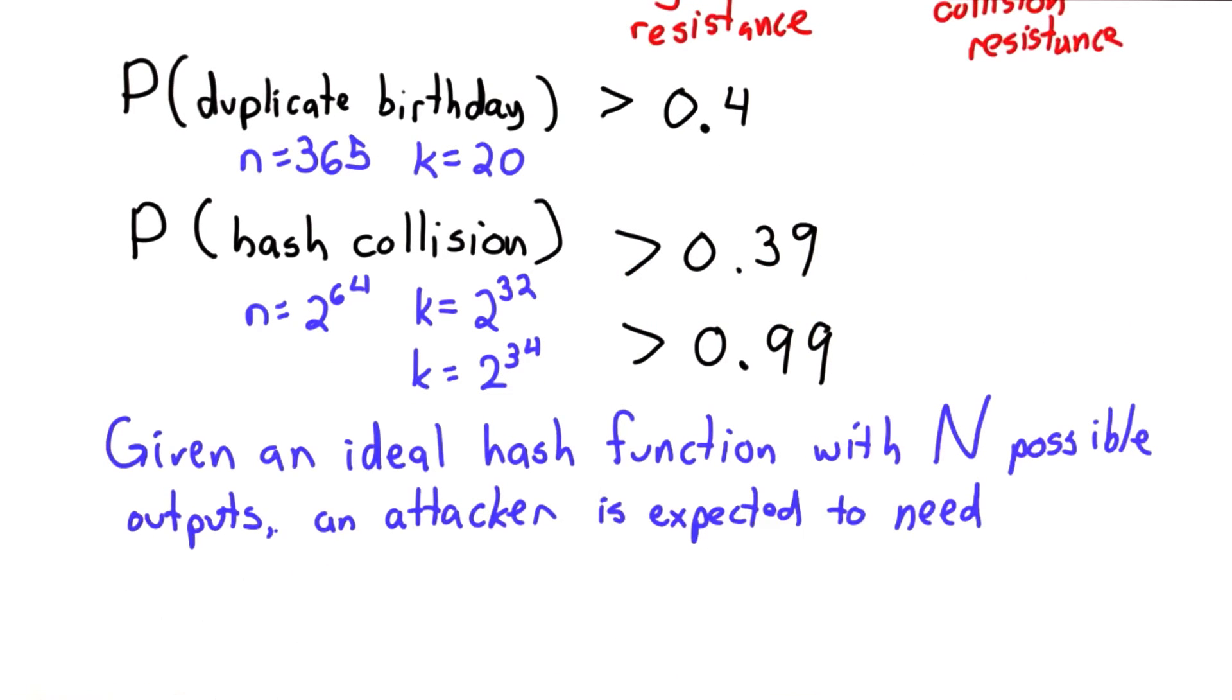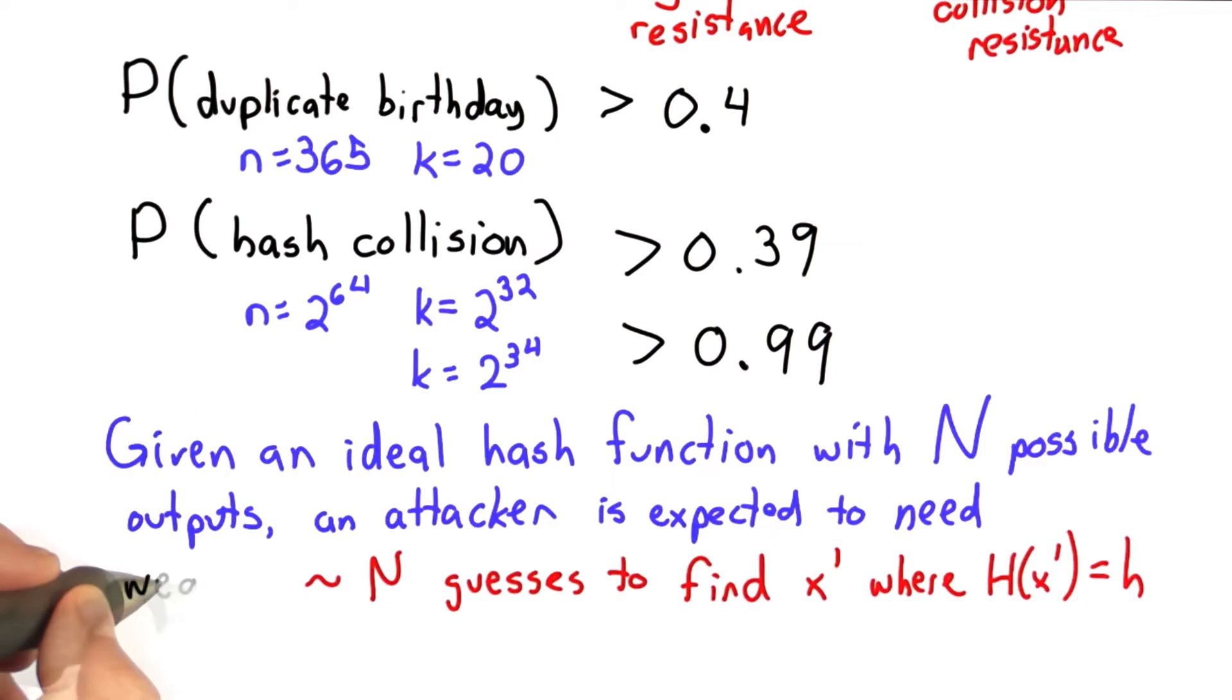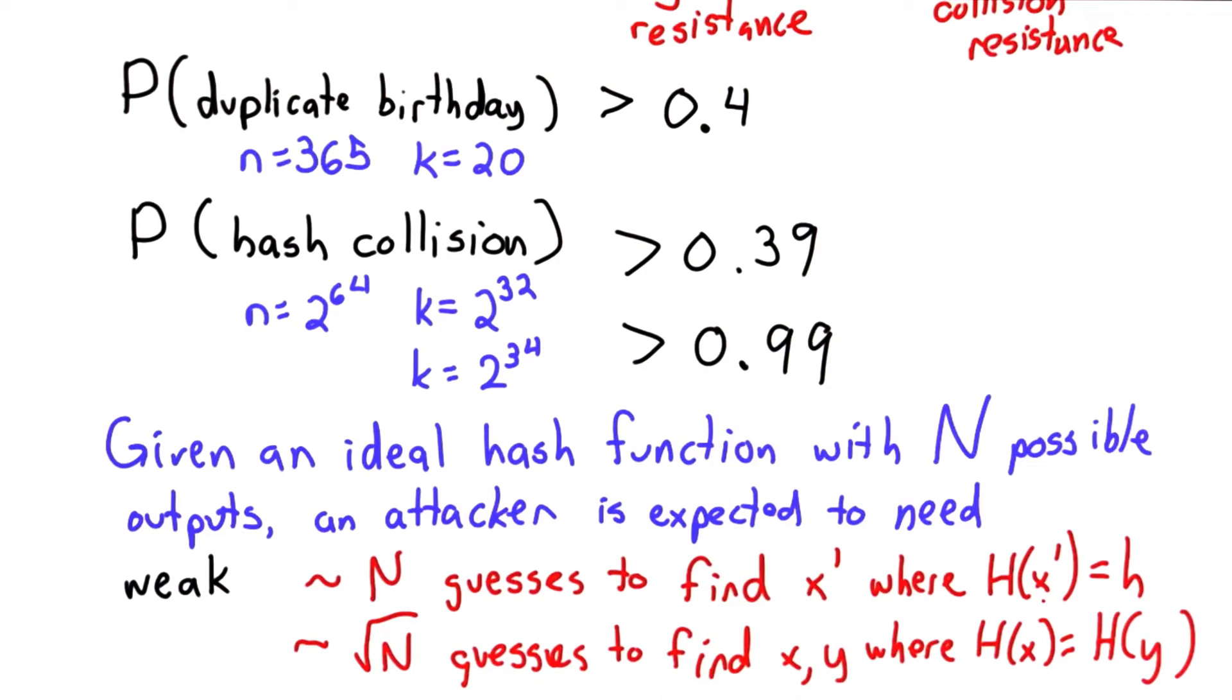So the conclusion is that given an ideal hash function with n possible outputs, an attacker needs about n guesses to find an input that hashes to a particular value, but only needs about the square root of n guesses to find a pair that collide. This assumes that an attacker can store all those hash values as they try the guesses and compare it to all the previous ones.